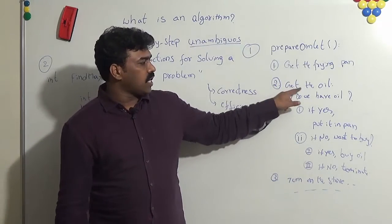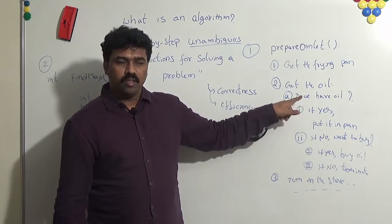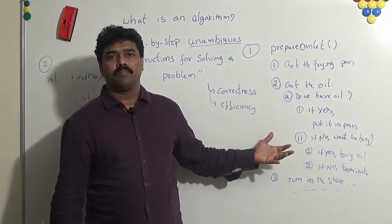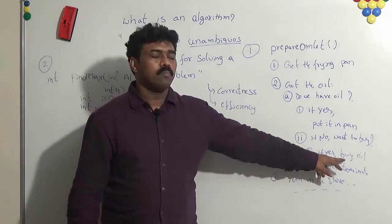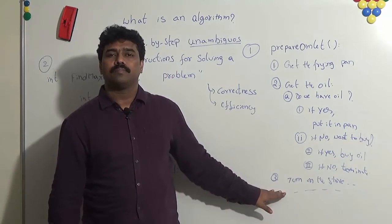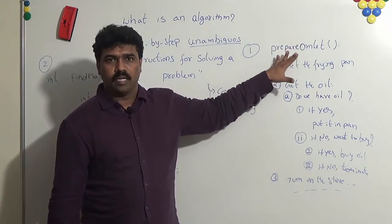So if you carefully observe, the second step has sub-steps. First we are checking, do we have oil or not? If not, whether we want to purchase. If we decide not to purchase, we can terminate there itself. If yes, we can buy the oil and then go to the second step.